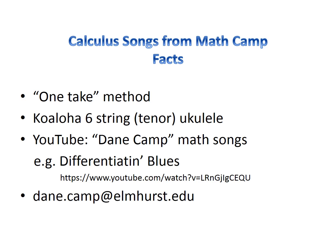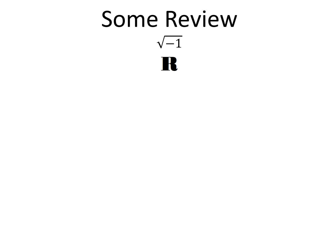Now let's sing. But first, some review — you'll have to fill in the blanks. Root negative one is i. Script R in mathematics stands for real numbers. Sideways caret means greater than or more than, so two together would be much greater than. Greek letter sigma stands for sum. The upwards caret is a conjunction. And 2.718 is approximately equal to the important constant e.